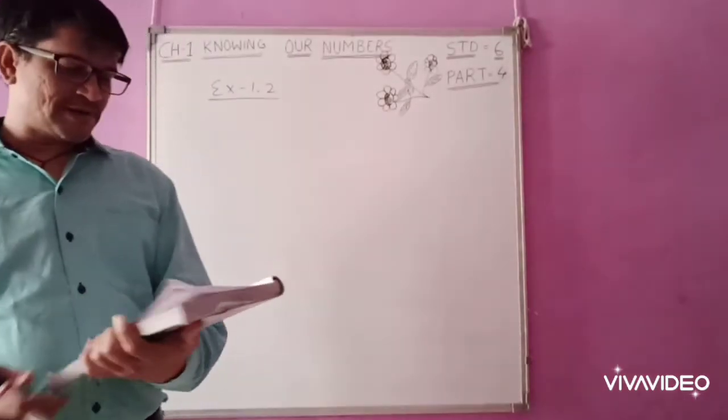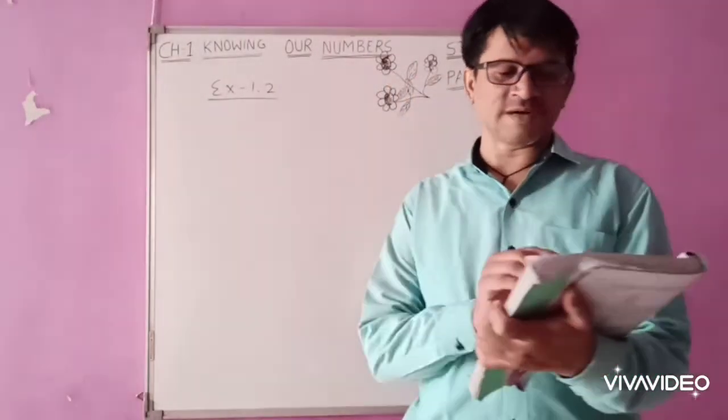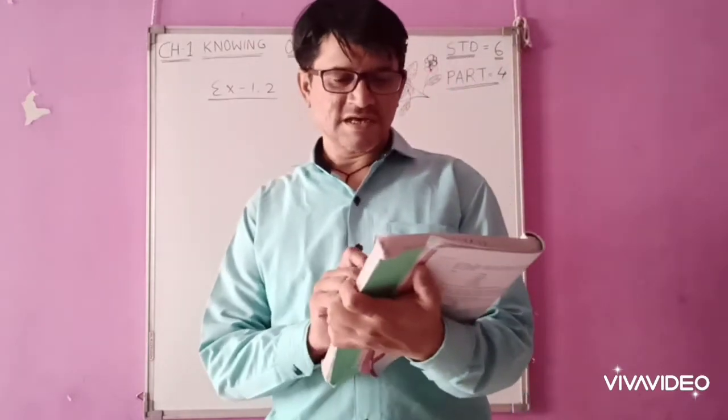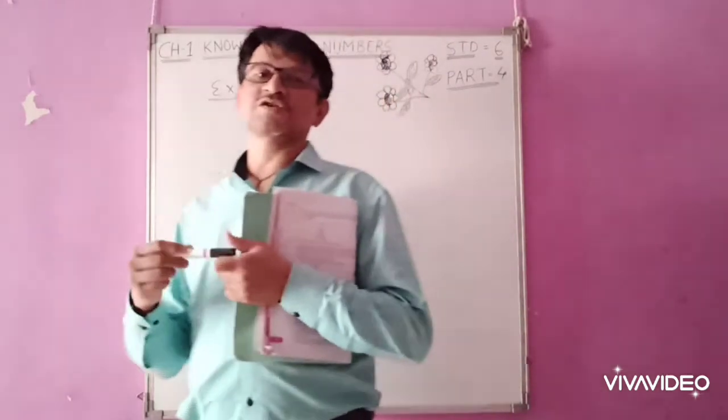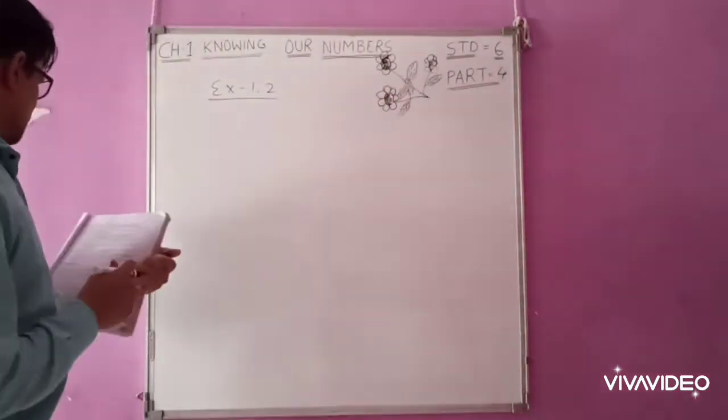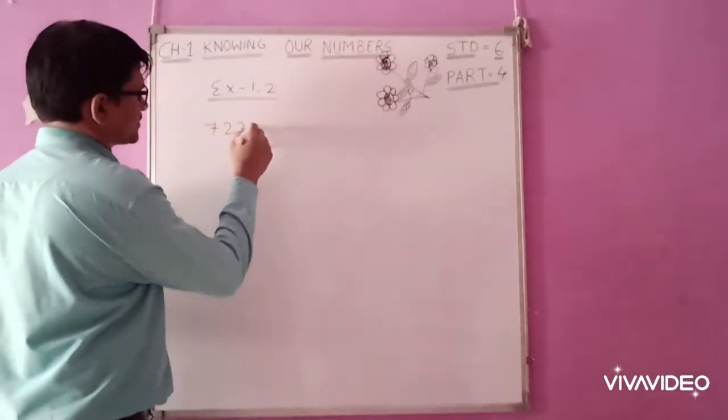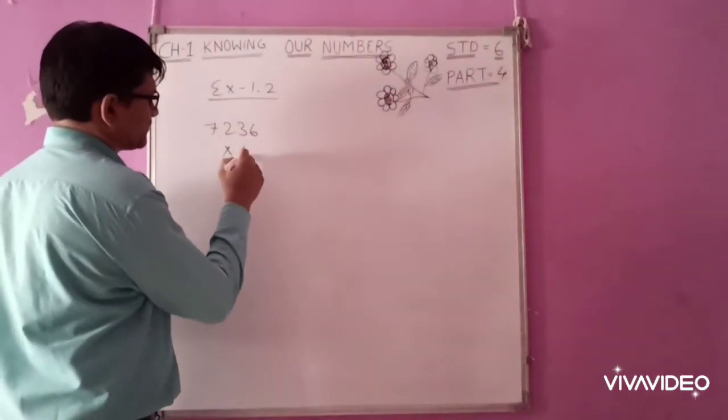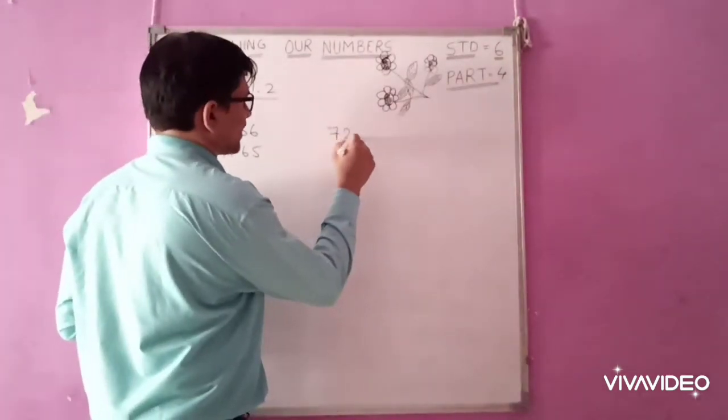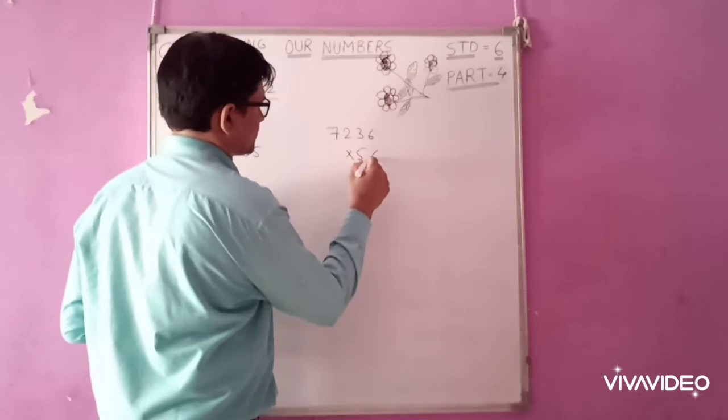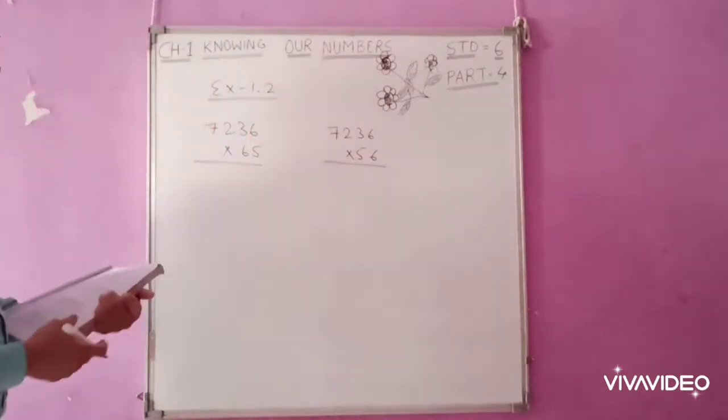A student multiplied 7,236 by 65 instead of multiplying by 56. By how much was his answer greater than the correct answer? So first, 7,236, he multiplied by 65. He was supposed to multiply it by 56. First, multiplying with both the numbers.